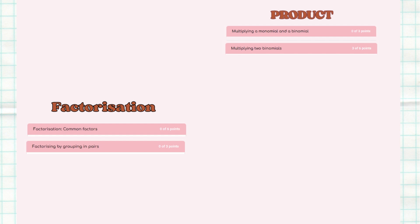Under products, multiplying a binomial got a total zero, while the second section on multiplying a binomial got three out of two right — meaning I half understand it. Under factorization, factorizing a common factor and factorizing by grouping pairs both got total zero. So according to the color method, you start with the ones you did badly: product — multiplying a monomial and a binomial — and those two factorization sections.